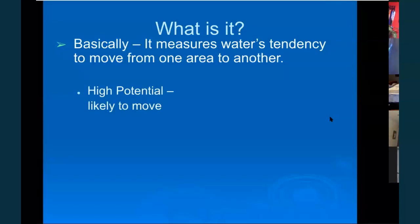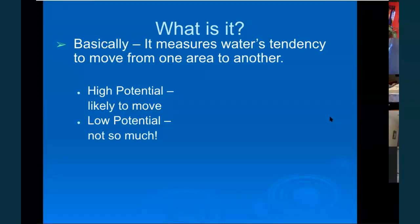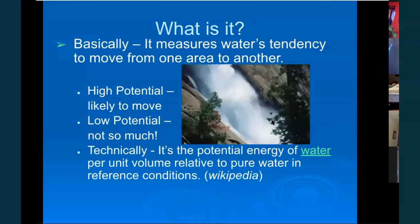Things move from a high pressure to a low pressure, a high temperature to a low temperature. In order for two things to be equal, you always have to go from high to low. If we go from low to high, we only increase the gradient. So water with a high potential is likely to move; low potential, not so much.